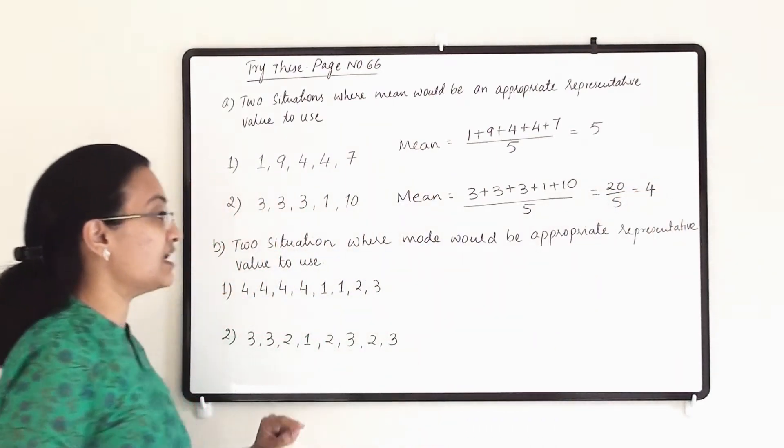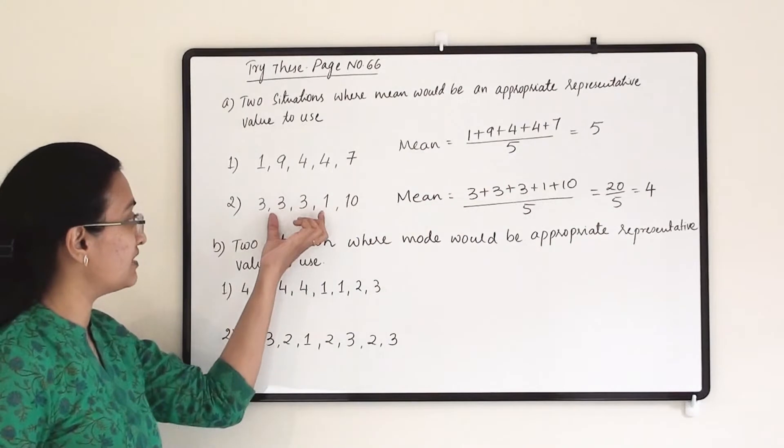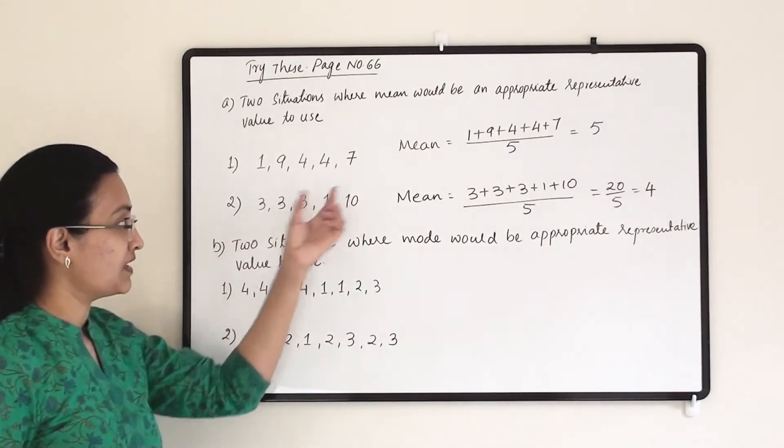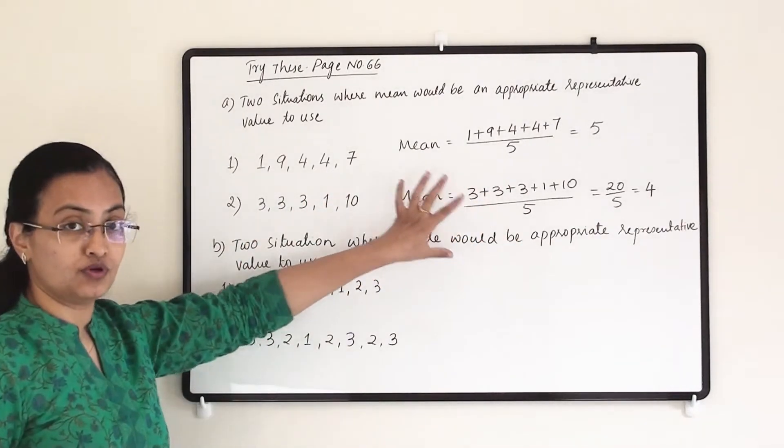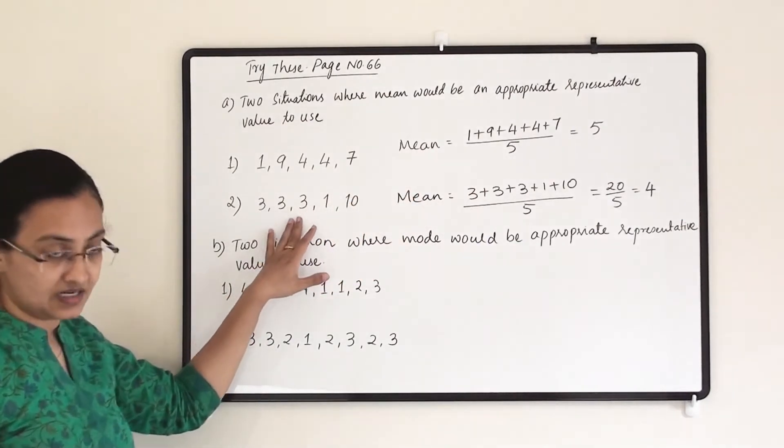So again mean has changed. If you write mode, then it will be 3, but mean here is 4. So mean is the correct representative of this data.